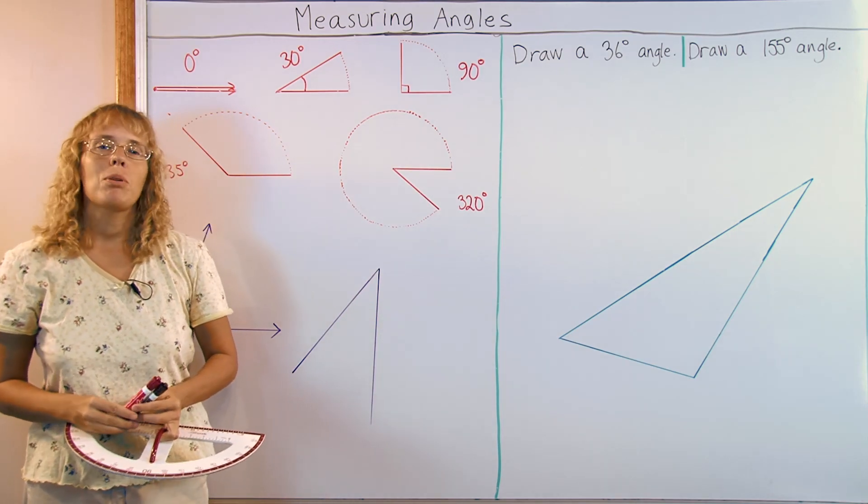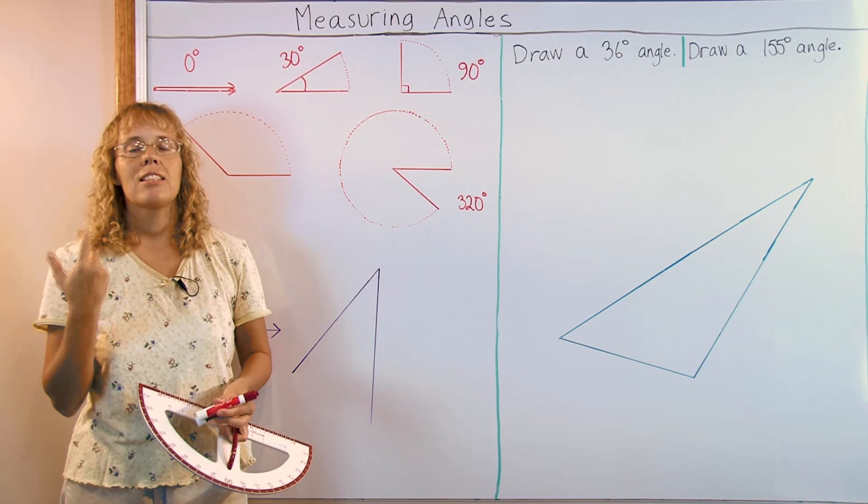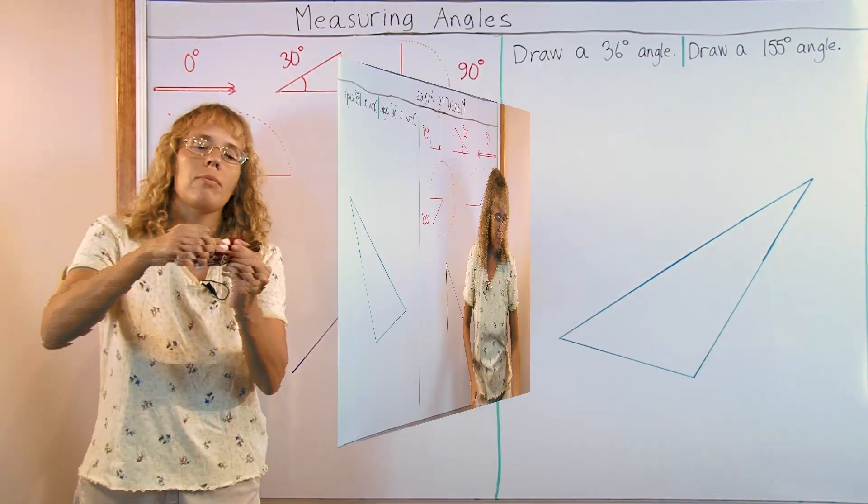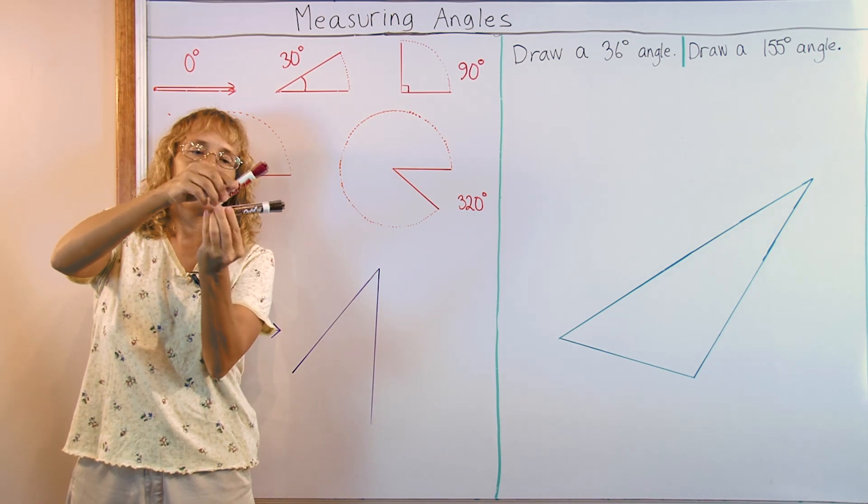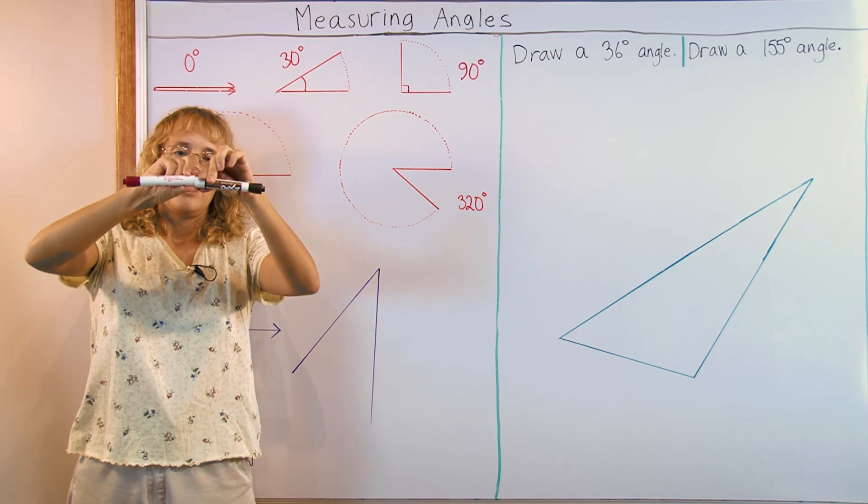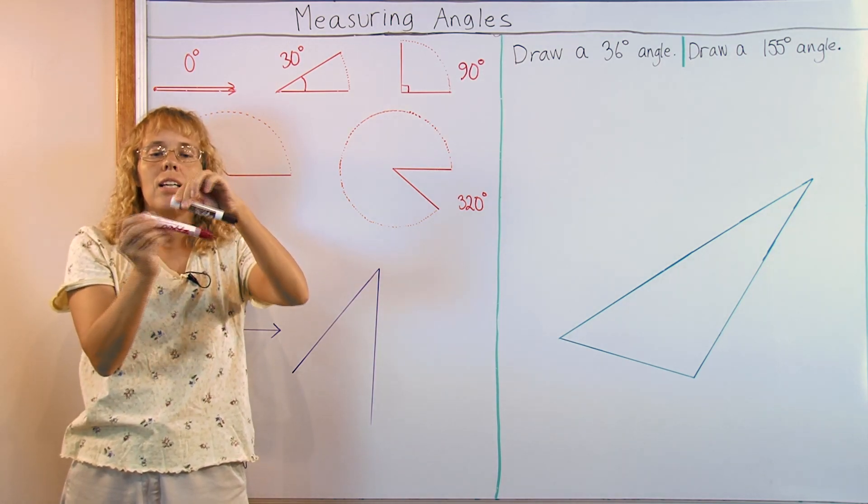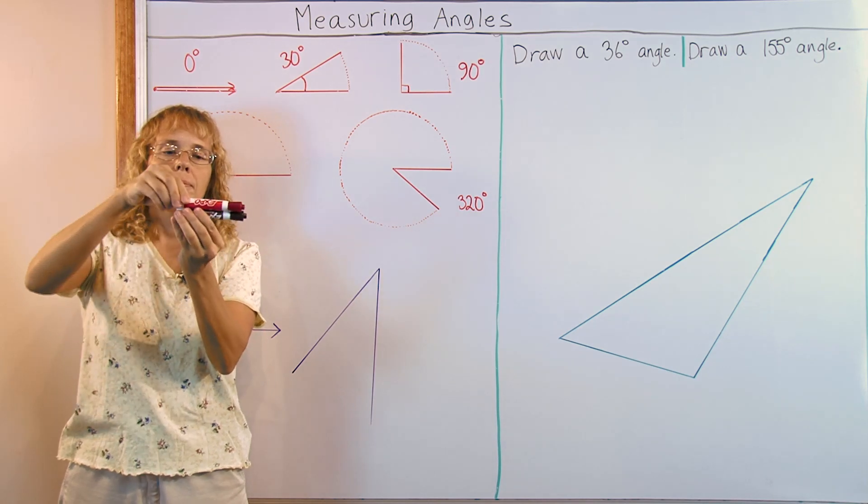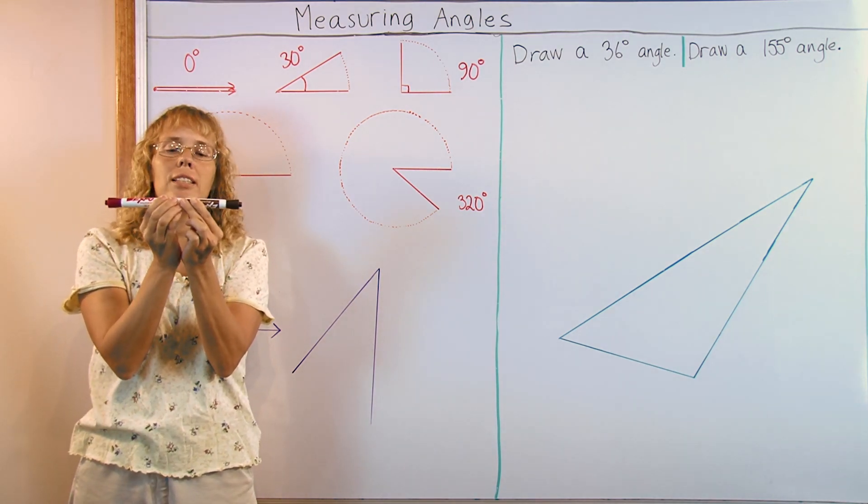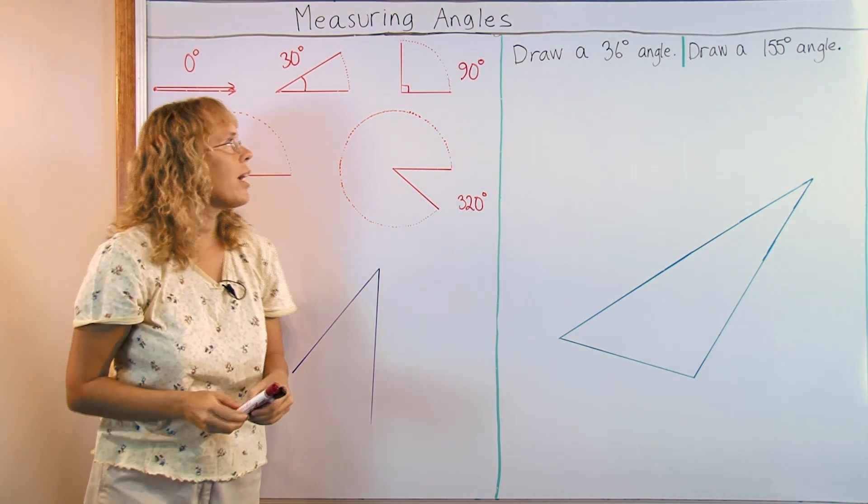To measure angles, people have agreed that the full circle would be 360 degrees. So if your angle opens up at a zero angle and goes all the way over here, then that would be 360 degrees. If it just goes half that way to a straight angle, then that's 180 degrees. And if it goes up this much, it is 90 degrees, the right angle.